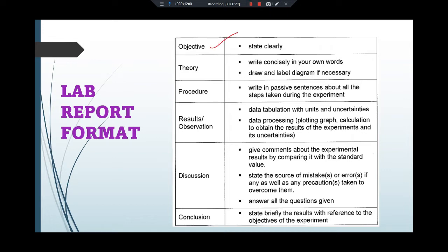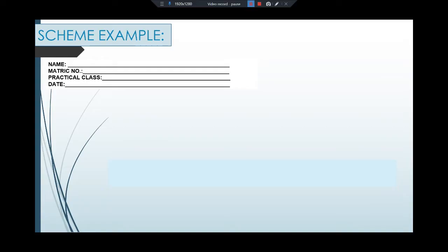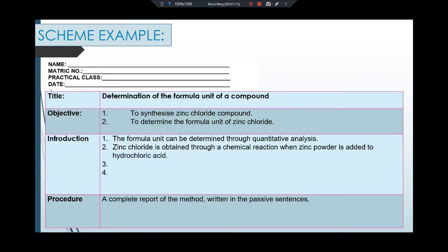Generally this is the lab report format. You must have objective, theory, procedure, results or observation including calculation, discussion including exercise questions, and conclusion. But first, don't forget to write down your name, your metric number, your practical class, and the date for the experiment.